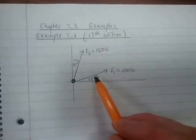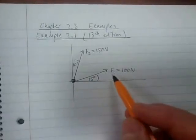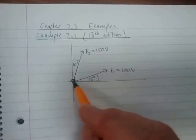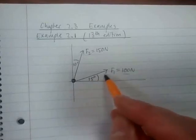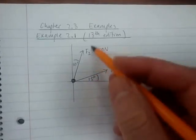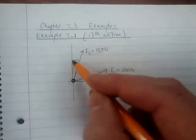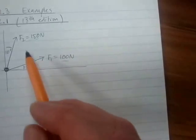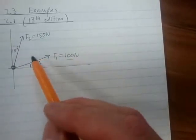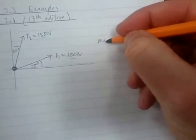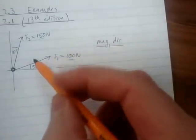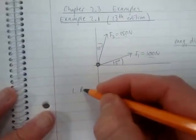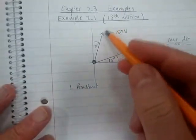Remember that a force is a vector — it has a magnitude and a specific direction. F1 has magnitude 100 newtons at 15 degrees to the horizontal, and F2 has magnitude 150 newtons with 10 degrees giving us its direction. The question asks us to find the magnitude and direction of the resultant force.